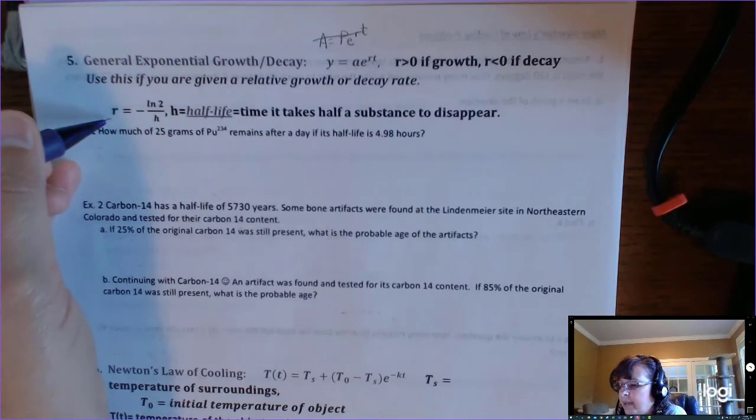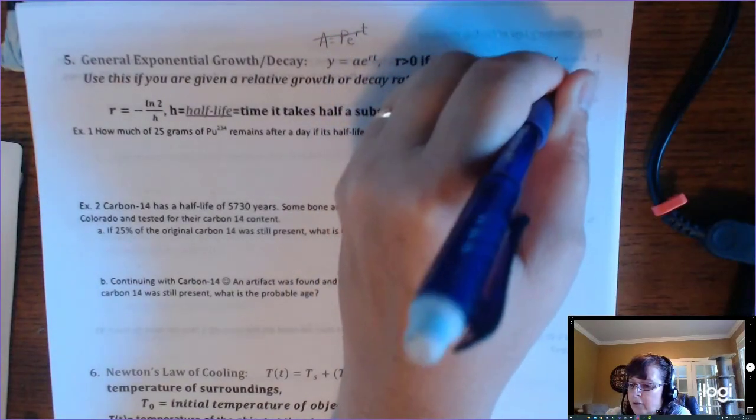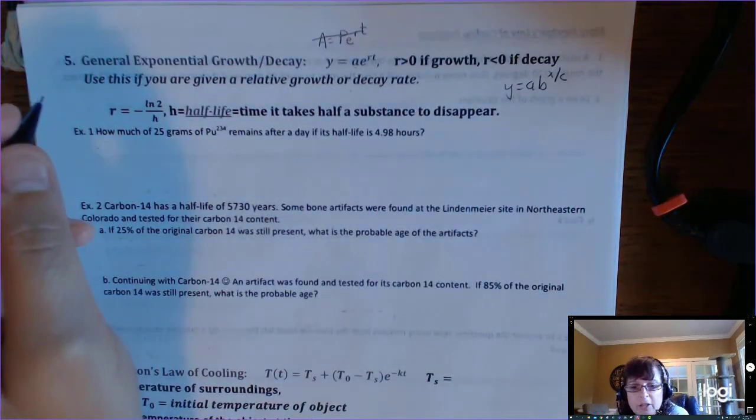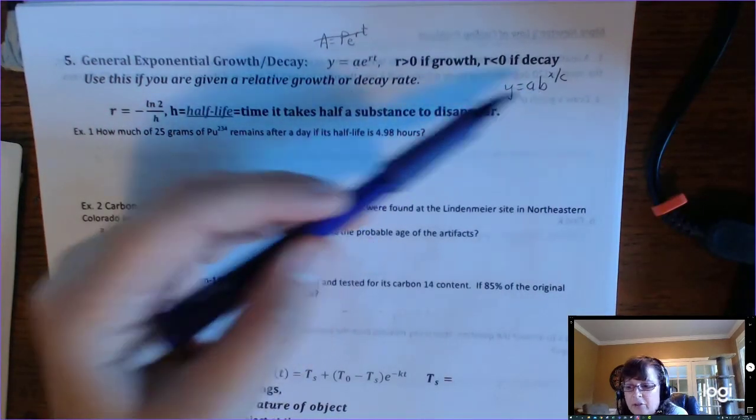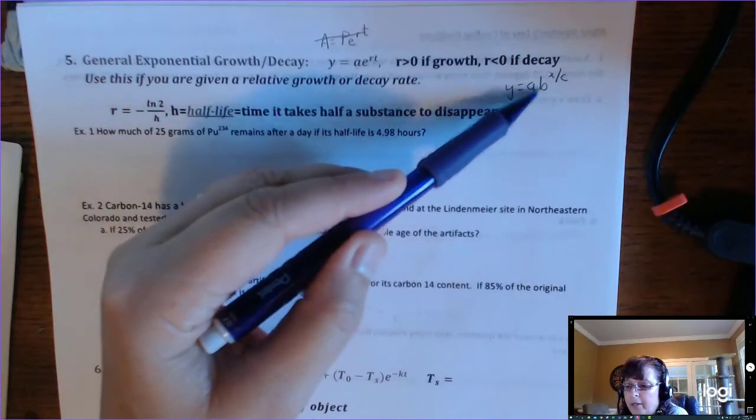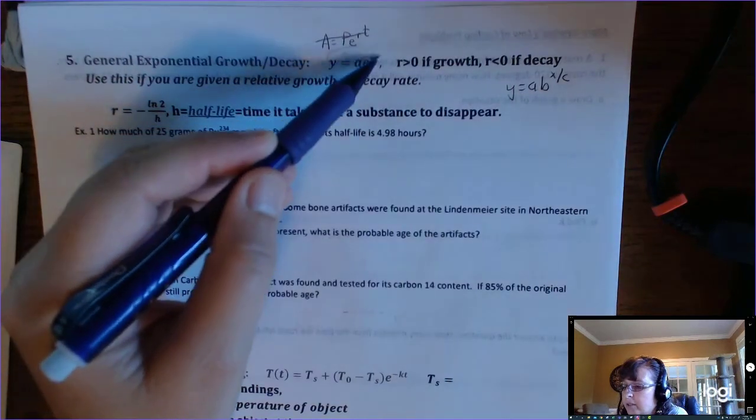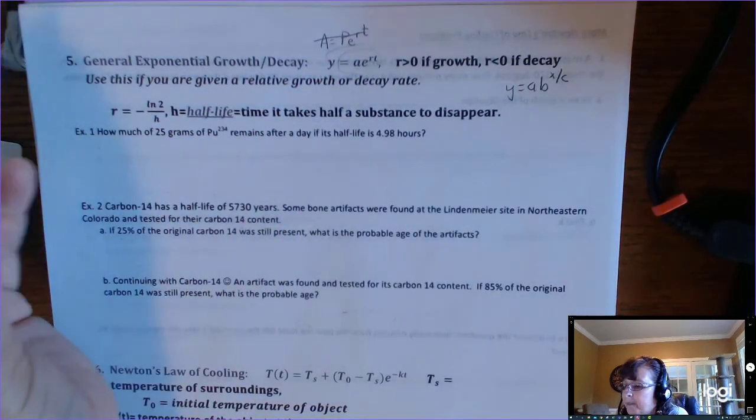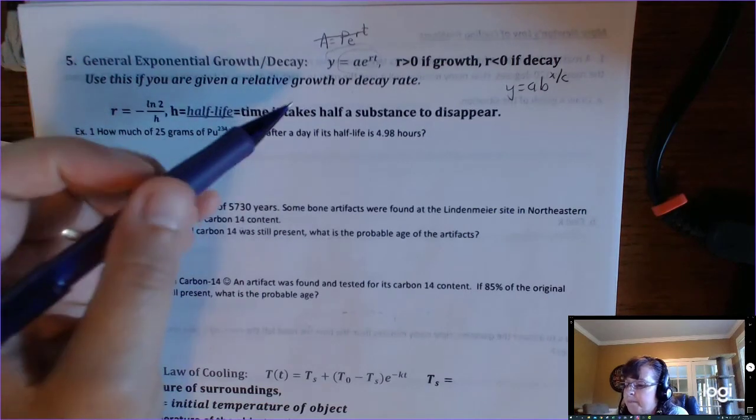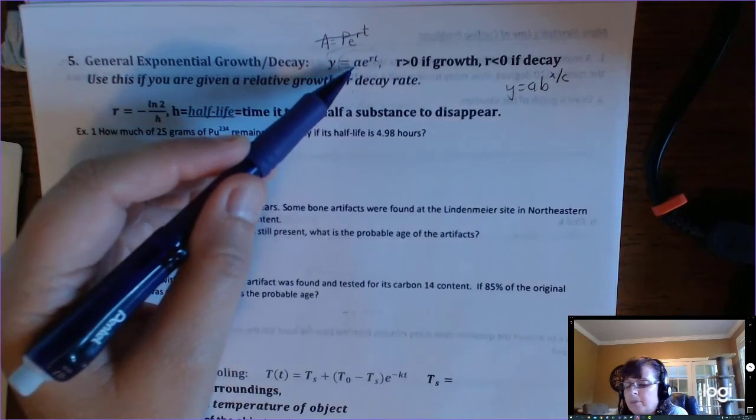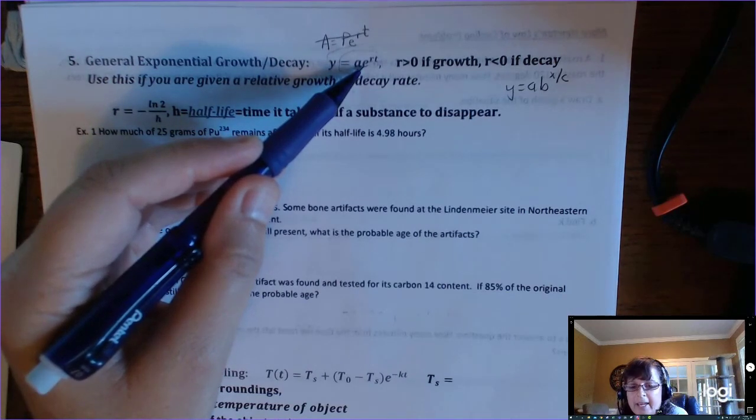Now, if you have a half-life problem, you can use the old formula. So I split the videos up, but the first video talks about the general form when you have a growth or decay factor. But there's another way that you need to know about, because this formula works really well when you have a relative growth rate or decay.